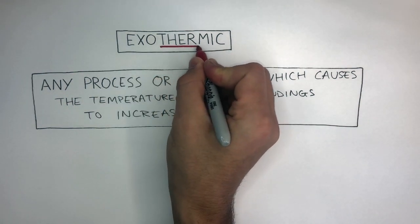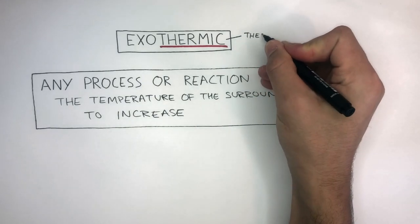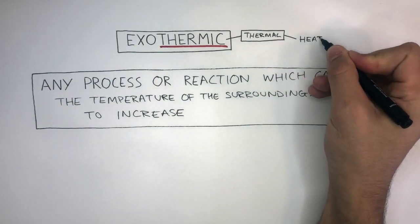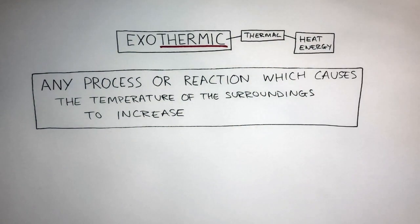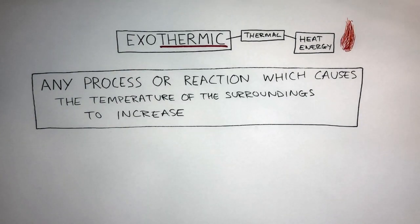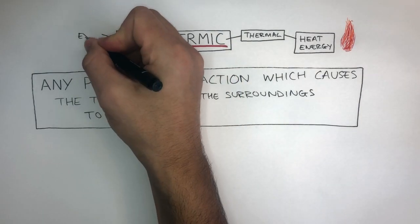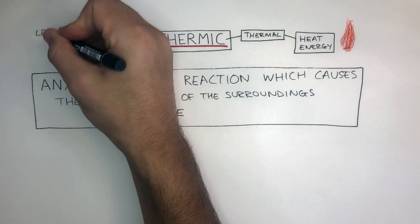The word thermic comes from the word thermal, and thermal means heat energy. So you can think of the word thermic as just meaning heat energy. Exo means exit, and this means to leave.